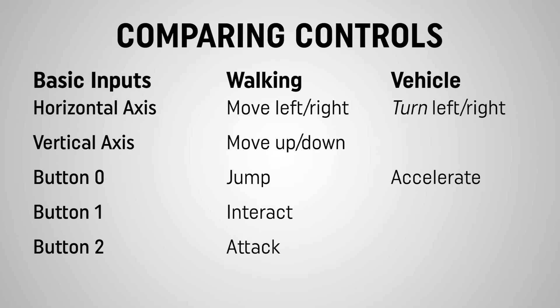Button 0 will always accelerate our vehicle. Button 1 is going to have a secondary action which is also very important — braking. As we are moving forward we will probably slow down eventually, but there may be times we need to come to a faster stop, so we want a brake functionality. The third button is our least important button in a way, but it's still necessary — it's how we exit the vehicle. It's something we'll only use when we're done with the vehicle, but we obviously need it, otherwise we'd be trapped in the vehicle until we quit the game.